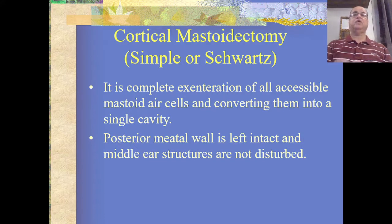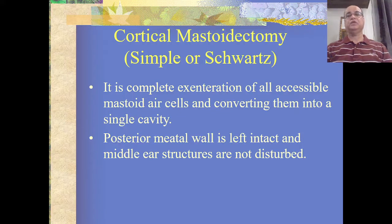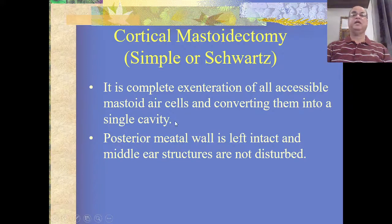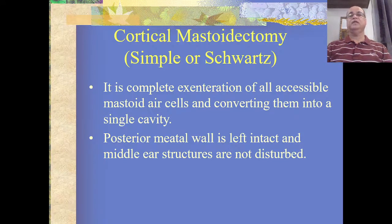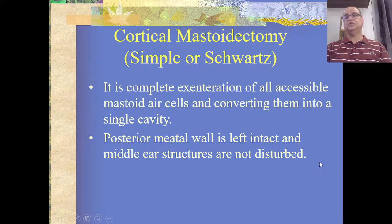One of the canal wall up procedures is cortical mastoidectomy, also called simple mastoidectomy or Schwarz mastoidectomy. It is complete exenteration of all accessible mastoid air cells, converting them into a single cavity. Normally the mastoid air cell system is honeycomb-type with bony partitions between cells; this procedure removes those partitions. The posterior meatal wall is left intact and middle ear structures are not disturbed.